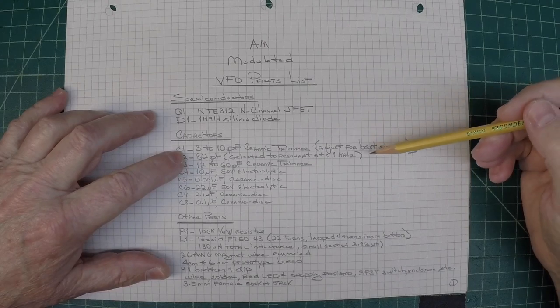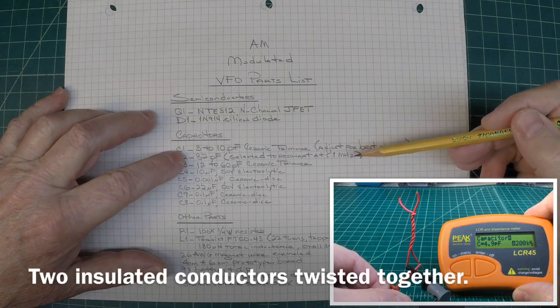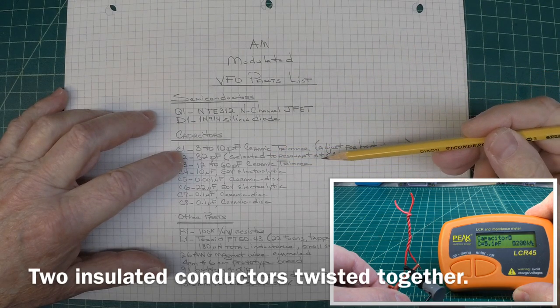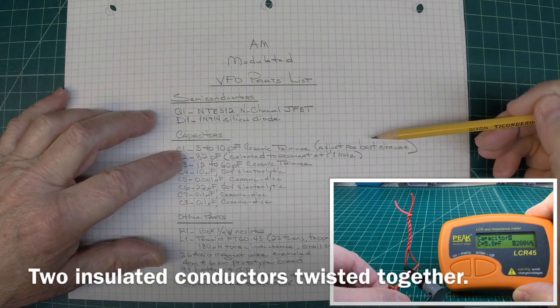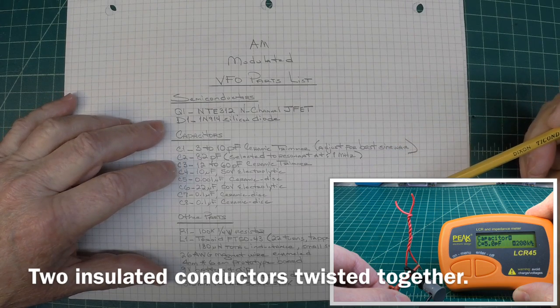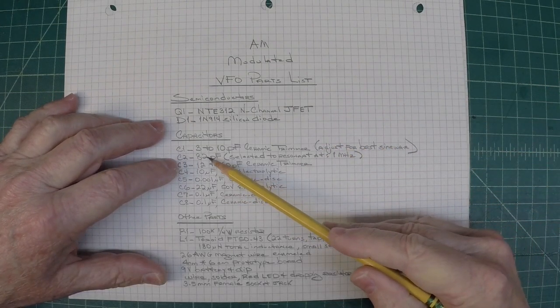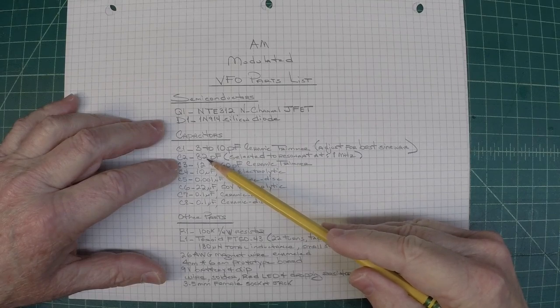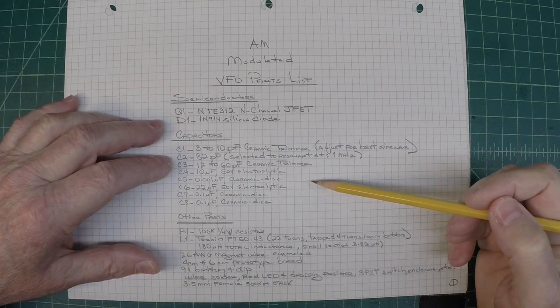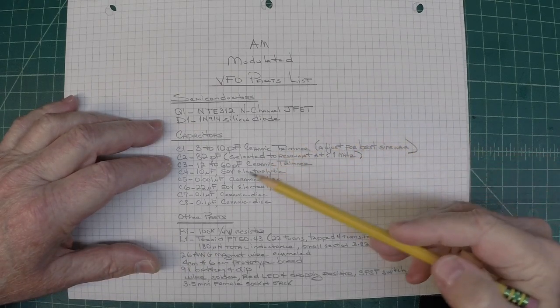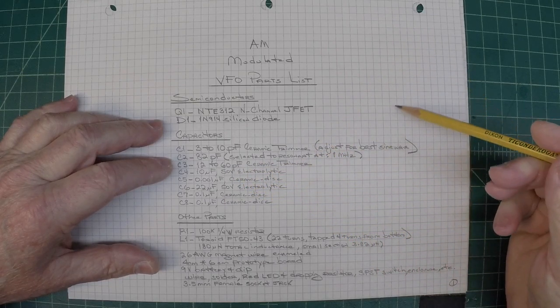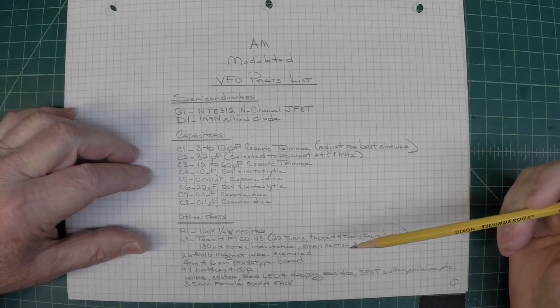One thing to note too on that C1, that 3 to 10 picofarad ceramic trimmer, you could make a gimmick capacitor if you choose to do so at that low of value. I think I did that for my first build. It worked out really well also. But you just adjust that to get the best, cleanest sine wave. And you can see I'm using a fixed capacitor for C2, that again being an 82 picofarad. And I've selected that to resonate plus or minus a little bit from one megahertz. A 12 to 60 picofarad ceramic trimmer in parallel with that. Then the other parts are called out here as well.